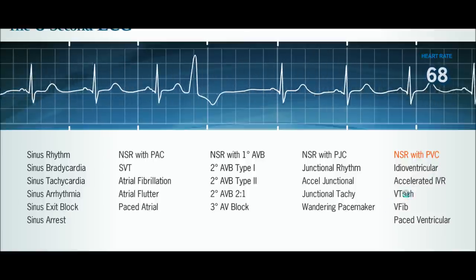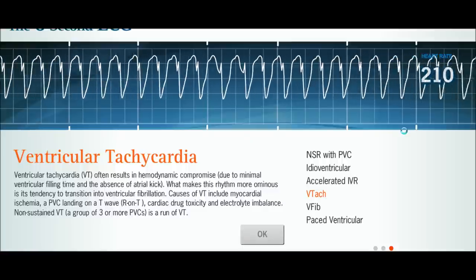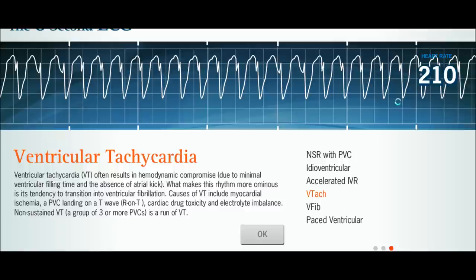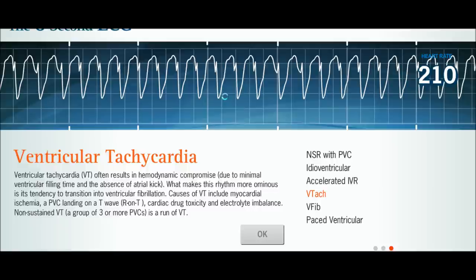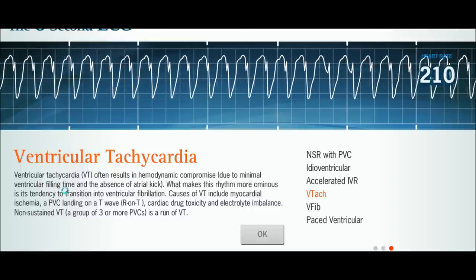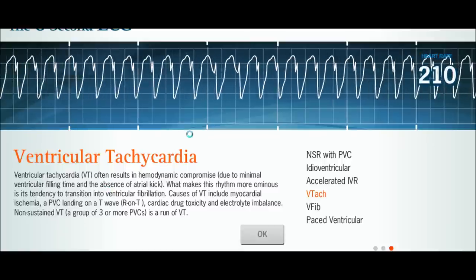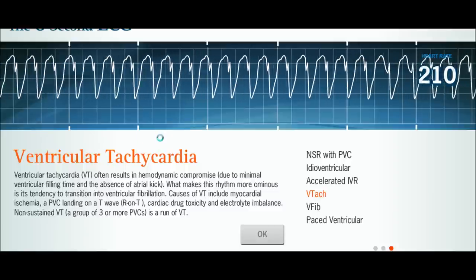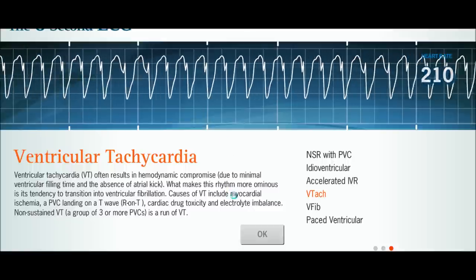This is a bad rhythm — you never want to see this. This is called VTAC. The way you characterize it: imagine a saw blade — nice and evenly spaced, little sharp points. That is the characteristic feature of VTAC. This will kill you because the heart is beating so fast it does not have time to fill with blood to pump, so it's essentially pumping nothing. It can be caused by a PVC occurring on top of a T wave — the repolarization of the ventricles — triggering this phenomenon. This will kill you unless corrected.